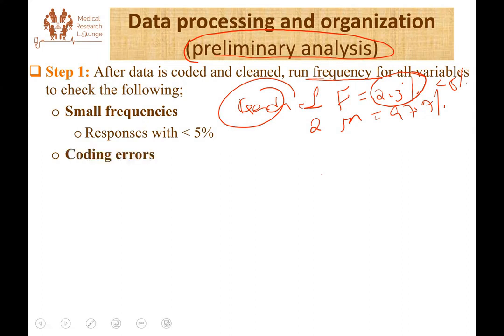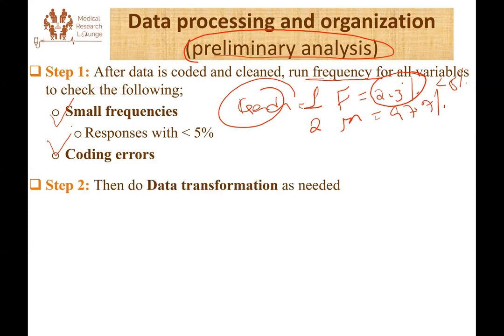The other thing we check, besides small frequencies, is whether there is a coding error. Even after properly coding the data, it's always a possibility that we might encounter a coding error, so we should keep that in mind. After running the frequency and checking for small frequencies and coding errors, we do data transformation to manage these problems.